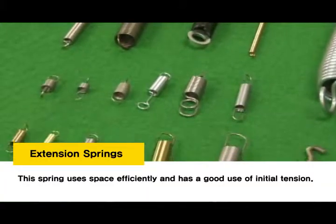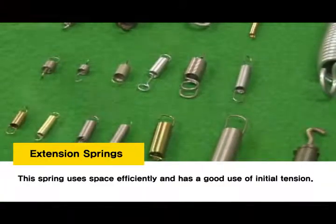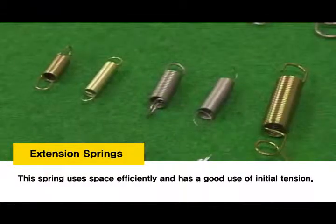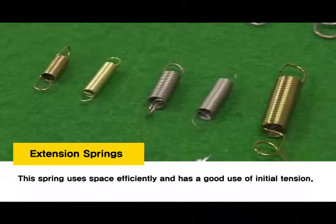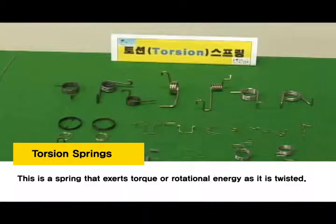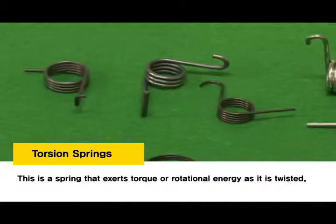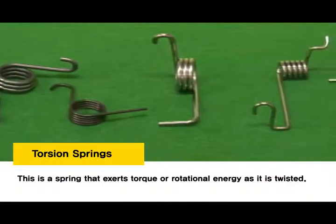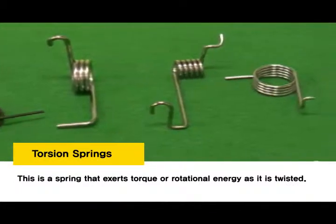Extension Springs: this spring uses space efficiently and has a good use of initial tension. Torsion Springs: this is a spring that exerts torque or rotational energy as it is twisted.